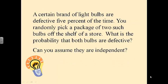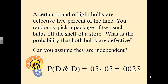A certain brand of light bulbs are defective 5% of the time. You randomly pick a package of two such bulbs off the shelf. What's the probability that both are defective? Can we assume they are independent? Yes — you can assume you're randomly picking a package of two, and the probability that one bulb fails is not going to affect the probability that the second bulb fails. So we use 0.05 times 0.05, and we get the probability that both are defective is 0.0025.